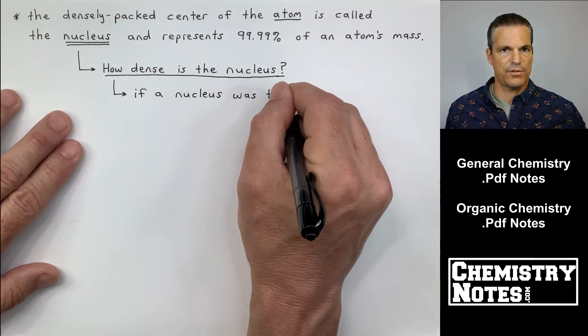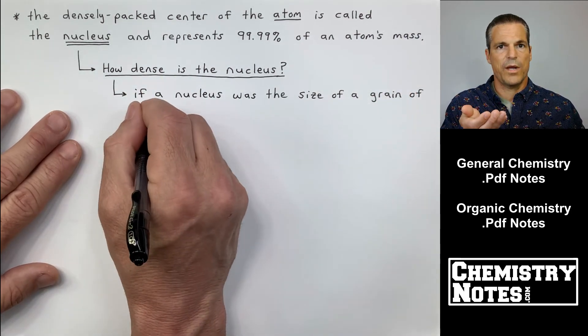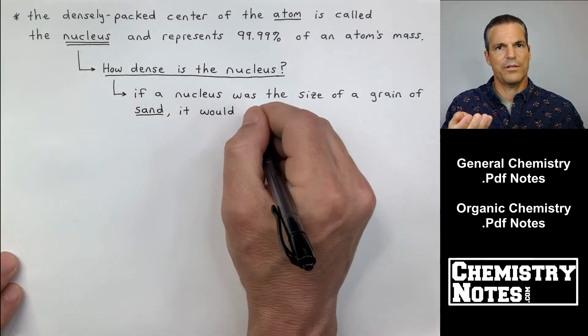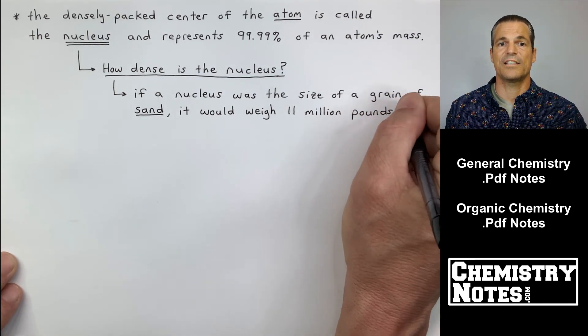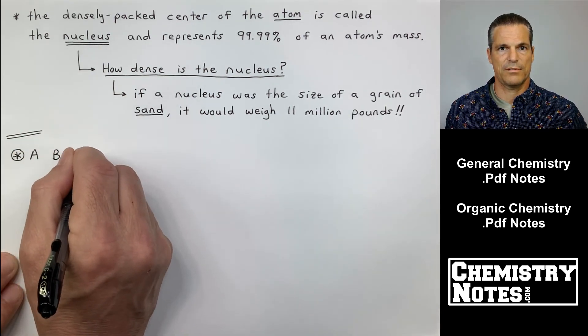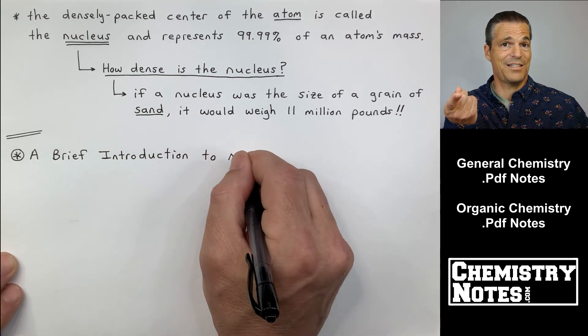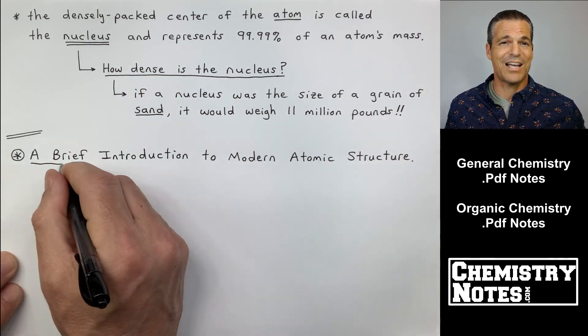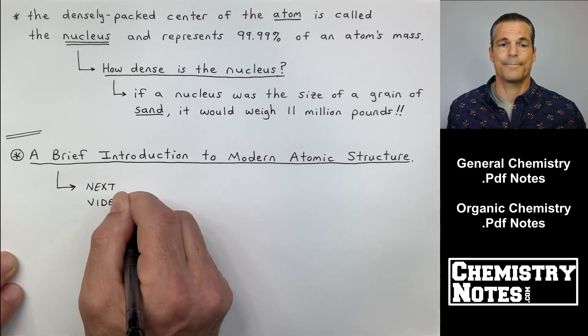Now, how dense is the nucleus? When I think of something that's dense, I think of like a lead weight. A lead weight can be pretty small and it's still really heavy. But that has nothing on the nucleus. For example, if a nucleus was the size of a grain of sand, it would weigh 11 million pounds. Imagine a little tiny grain of sand that was lead. It would still weigh essentially nothing to you. We are unable to comprehend just how dense a grain of sand being 11 million pounds is.